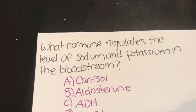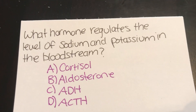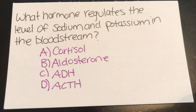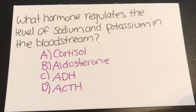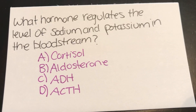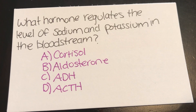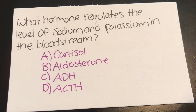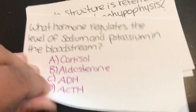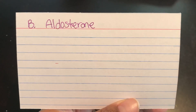What hormone regulates the level of sodium and potassium in the bloodstream? A, cortisol. B, aldosterone. C, ADH. Or D, ACTH. Answer: B, aldosterone.